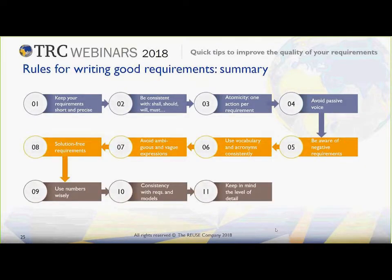Tip eleven: keep in mind the level of detail. We all know that one document is not all for our projects. In the most extreme cases, you can go from mission requirements to system requirements to subsystem requirements and so on. When you write your requirements, be consistent with the level. The rules that apply perfectly for a very low-level technical specification will probably not fit at all in a very high-level mission requirements document or business requirements document. For instance, the level of ambiguity you allow in a very high-level document can allow some room, but in a very technical specification there should be no room for ambiguity.